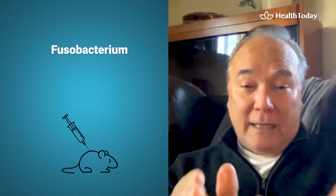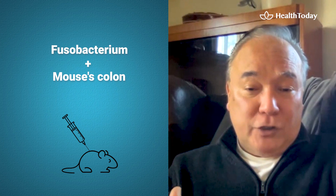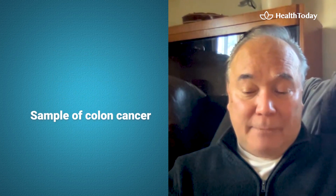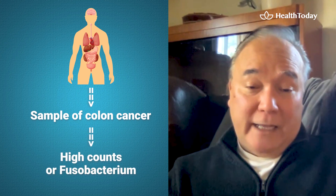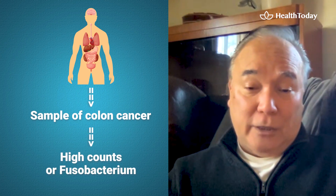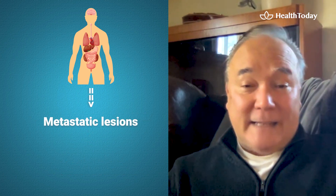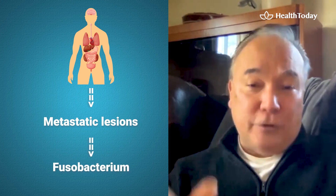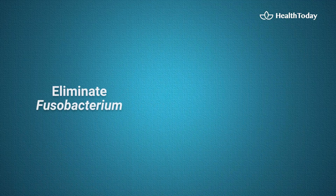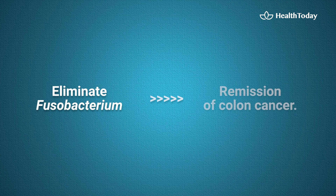If you take that microbe and put it in a normal mouse colon, it gets colon cancer. If you examine a sample of colon cancer taken out of a person, it's filled with high counts of Fusobacterium. If you look at metastatic lesions — like in the liver or lung — in colon cancer, it's filled with Fusobacterium. There's even preliminary evidence that if you eliminate Fusobacterium, you may get remission of the colon cancer.